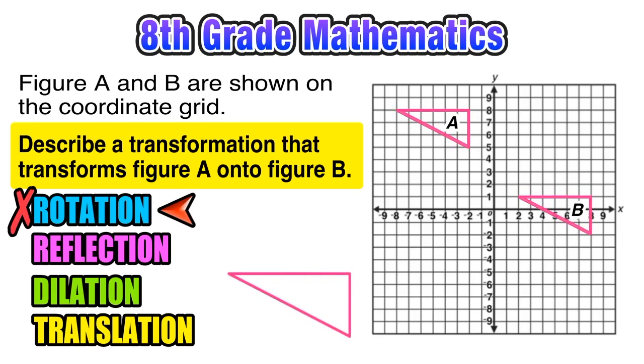So we can say that this is definitely not a rotation. Now let's check out reflection. We know that a reflection is a mirror image, but again, A and B does not represent a mirror image at all, so we know that this is not a reflection.